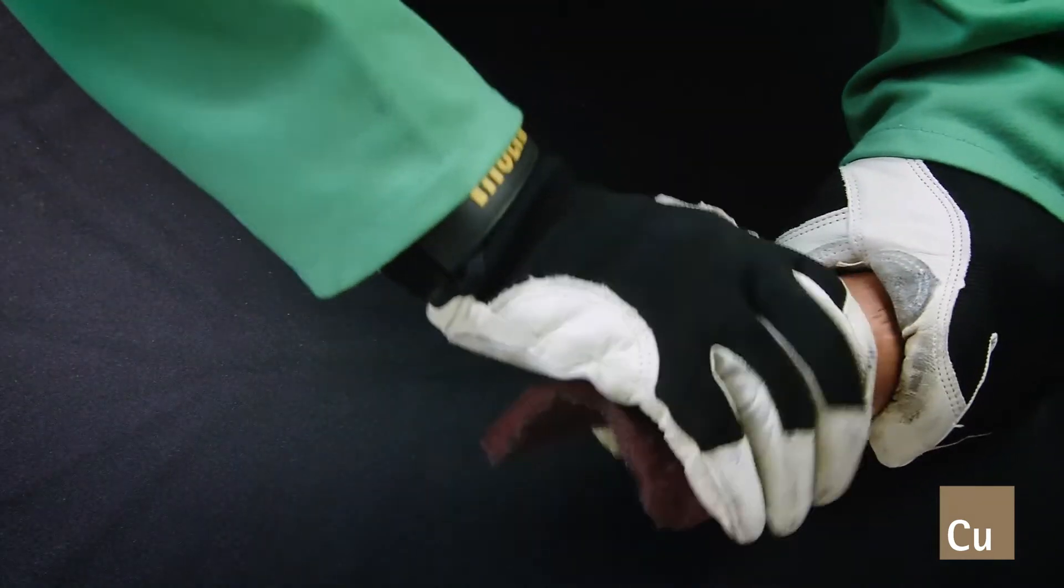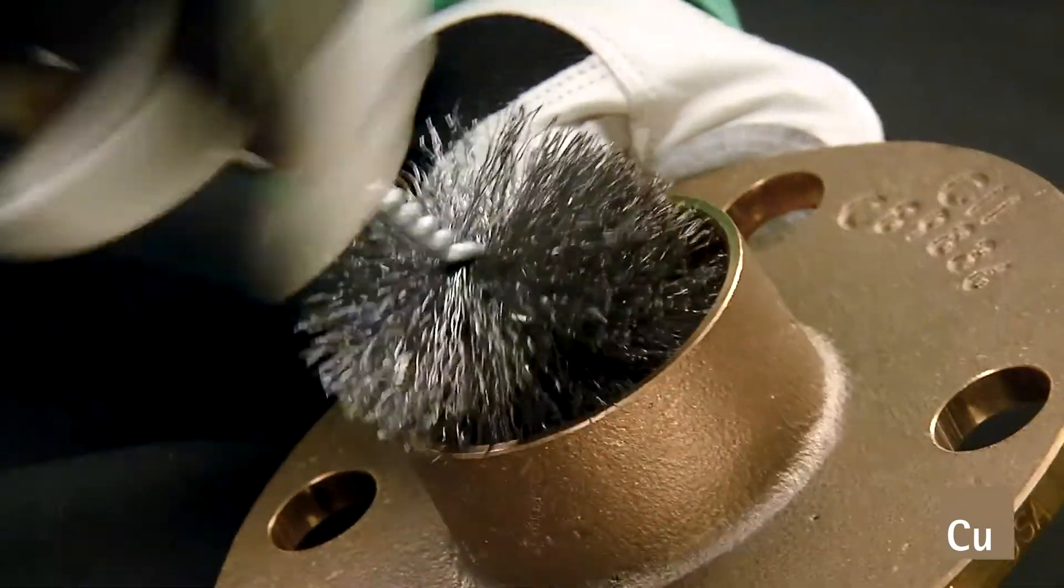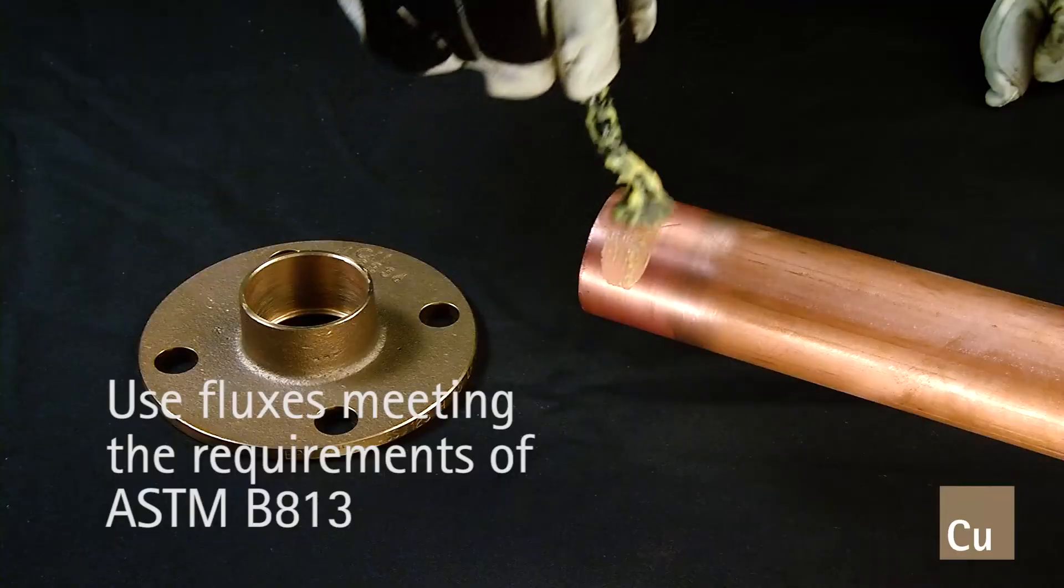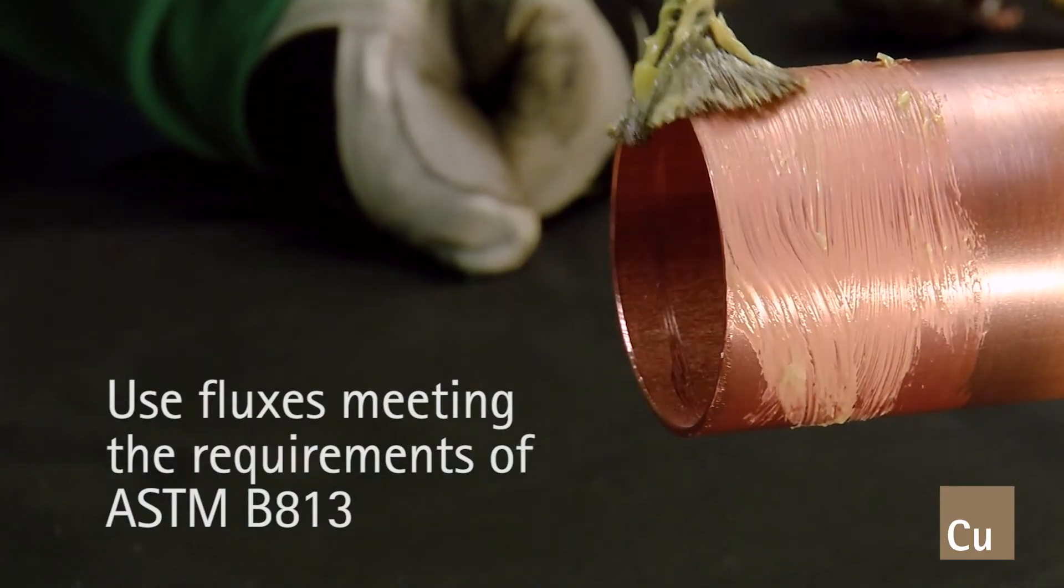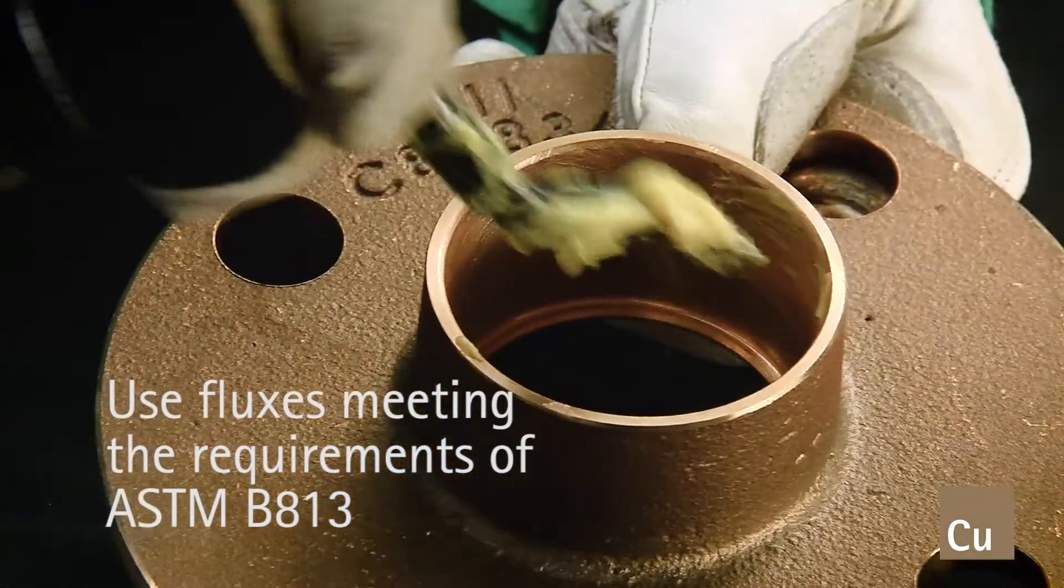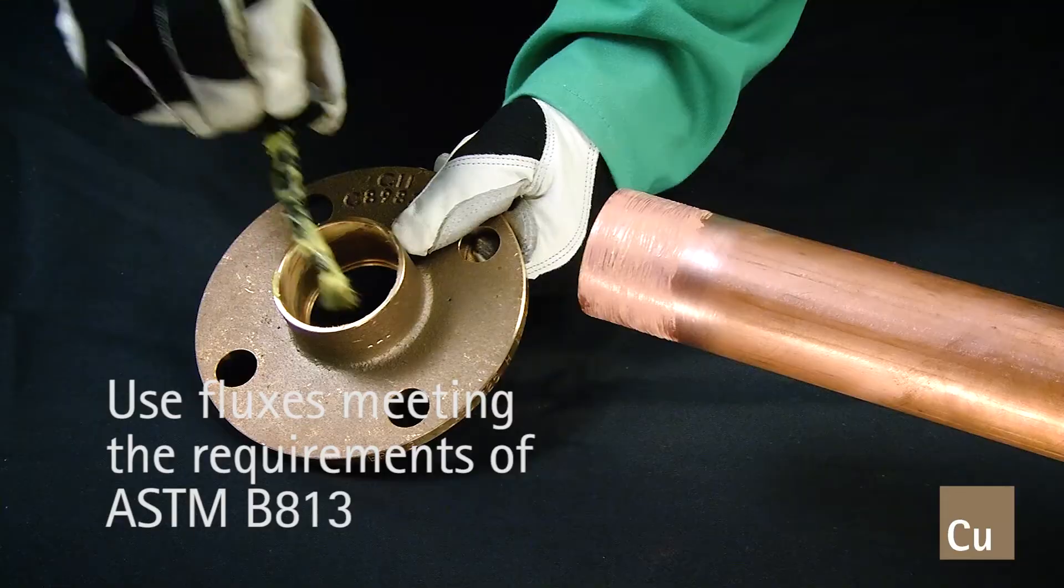Clean and remove any oxides, dirt, or other particles from the outside of the tube and the inside of the flange socket. Apply a thin, even coating of an approved solder flux material to the outside of the tube and the inside of the flange socket.